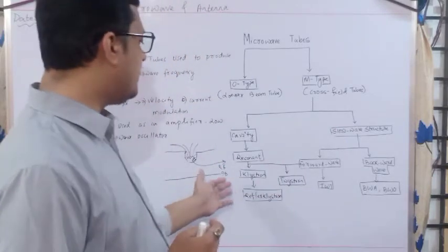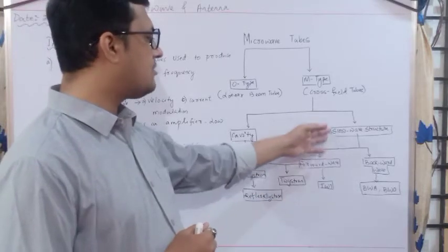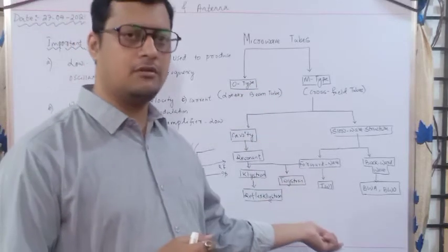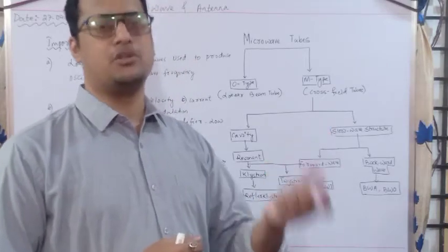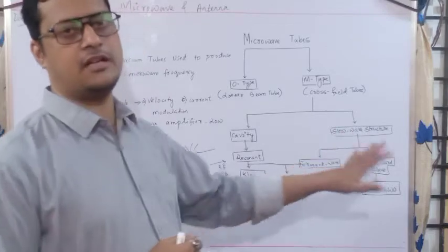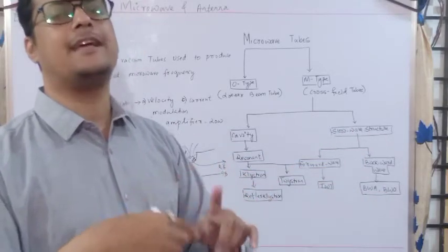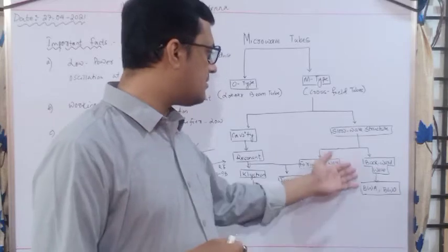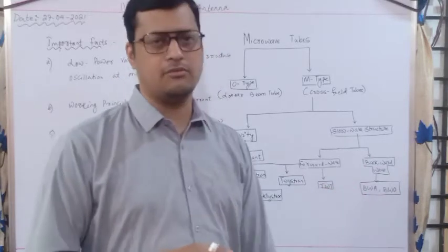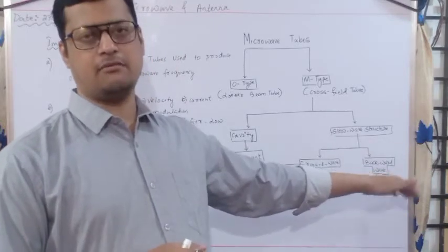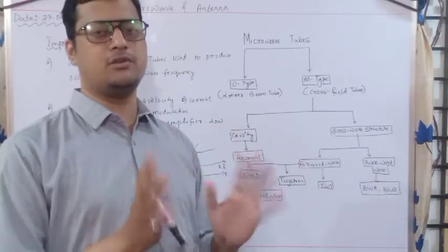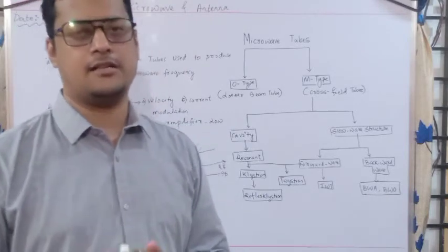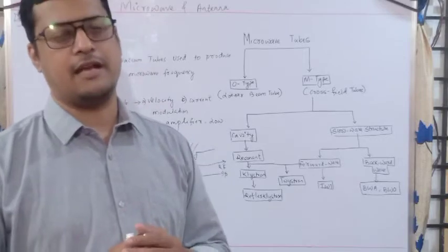We will discuss only the reflex klystron. The slow wave structure has two types: forward is called TWT — Traveling Wave Tube — which is similar to the reflex klystron but in a helical traveling wave structure. The backward wave structure includes BWA (backward wave amplifier) and BWO (backward wave oscillator). These tubes work as an amplifier, source, generator, and oscillator, whatever the application.